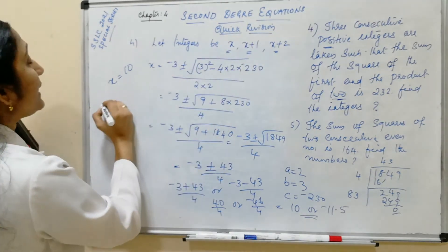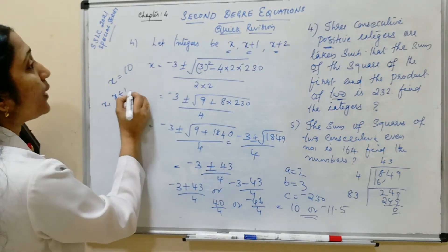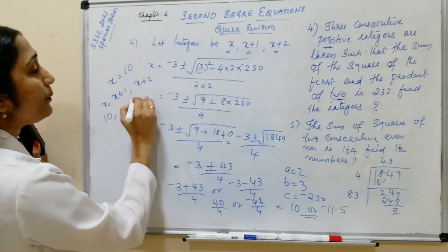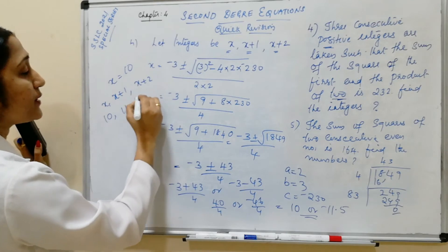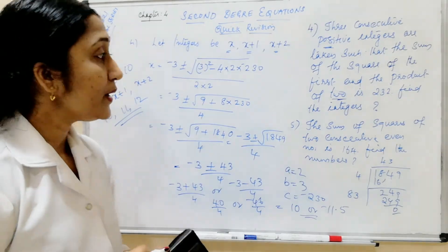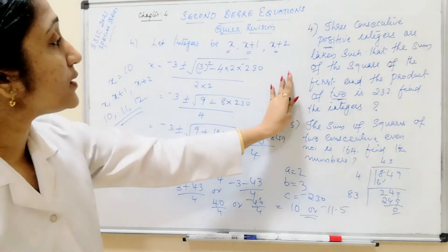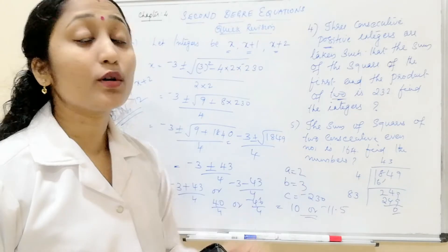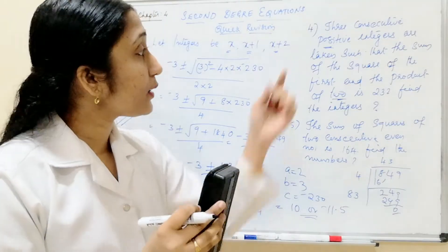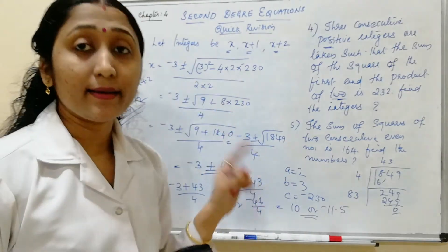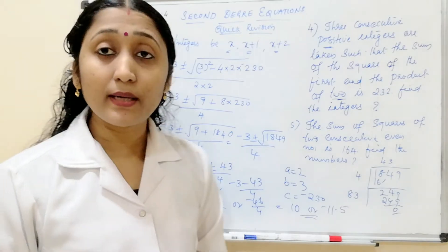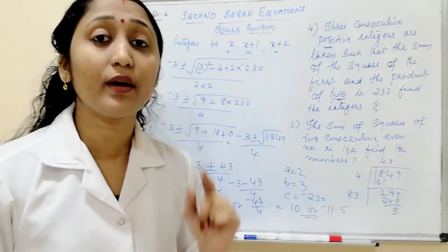Since we need consecutive positive integers, we take x equals 10. So the integers are x equals 10, x plus 1 equals 11, and x plus 2 equals 12. These are the 3 positive integers. This is the solution for the 4th question. Please read the question thoroughly. If you have any doubts, please comment in the comment box.